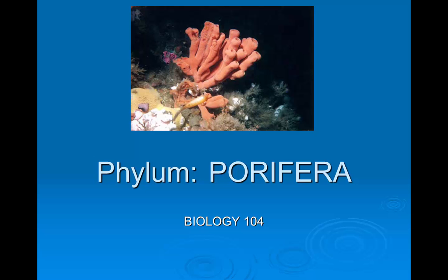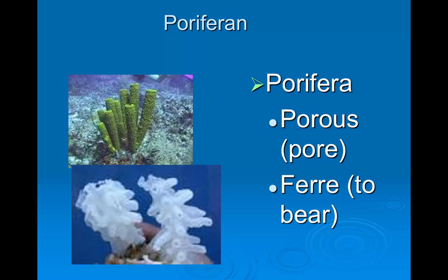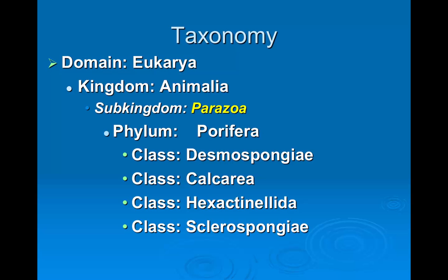We're going to start our talk about invertebrates with the phylum Porifera. The word Porifera means pore-bearing, so these are pore-bearing organisms like sponges. They belong in the domain Eukarya, the kingdom Animalia, the sub-kingdom Parazoa, and the phylum Porifera. There are four classes: Demospongiae, Calcarea, Hexactinellida, and Sclerospongiae.